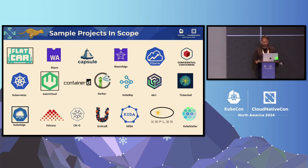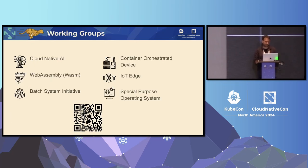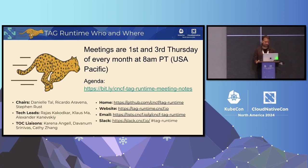A quick shout out to our three most recently leveled projects: KubeEdge is graduated, and Flatcar and WasmCloud, as of three days ago, are now incubating. Runtime has six working groups across all types of interests — so if you have an interest in any of these areas, there are separate meetings, separate communities, separate leads around AI, WebAssembly, OS, and all types of interest, all falling within Runtime. We hold meetings twice a month. These are our chairs and tech leads, and we work with the TOC — there's always a TOC liaison as a collaboration there.